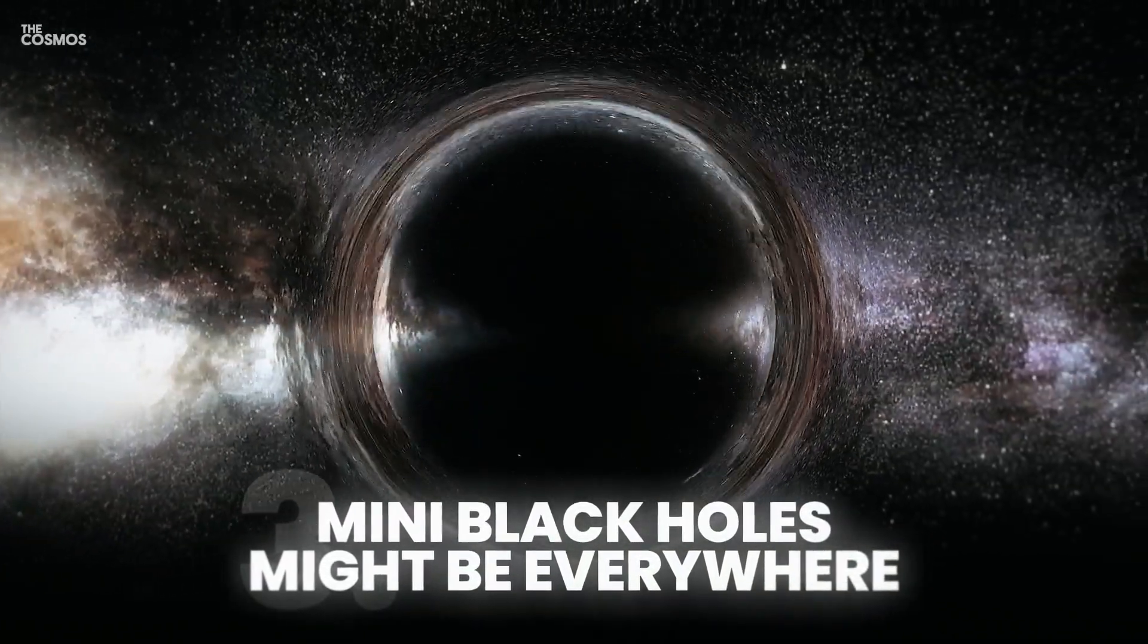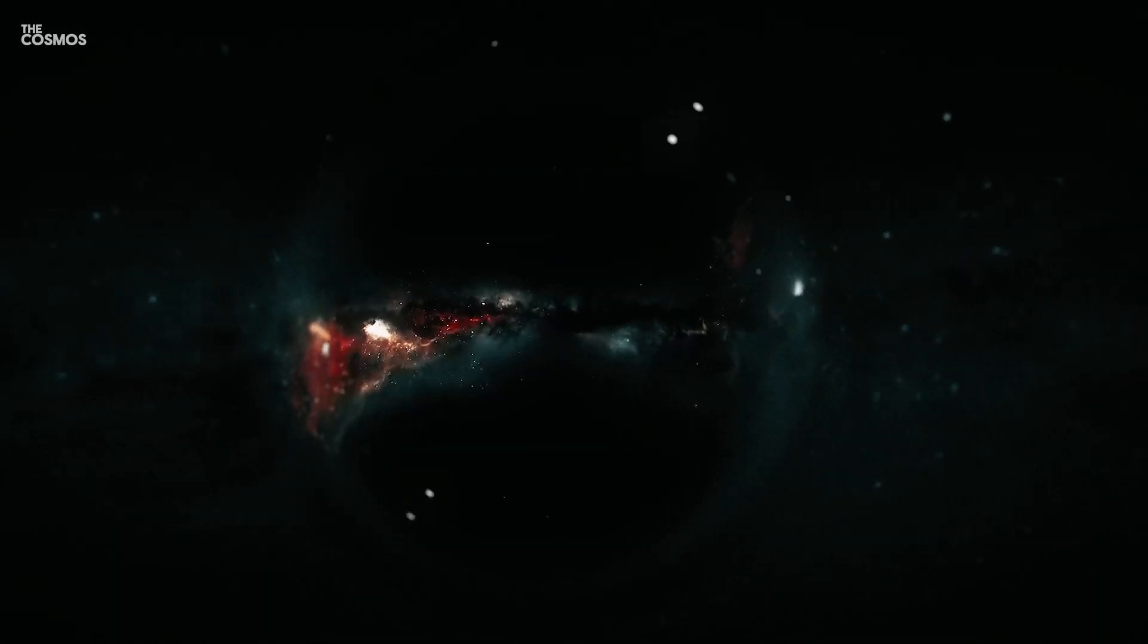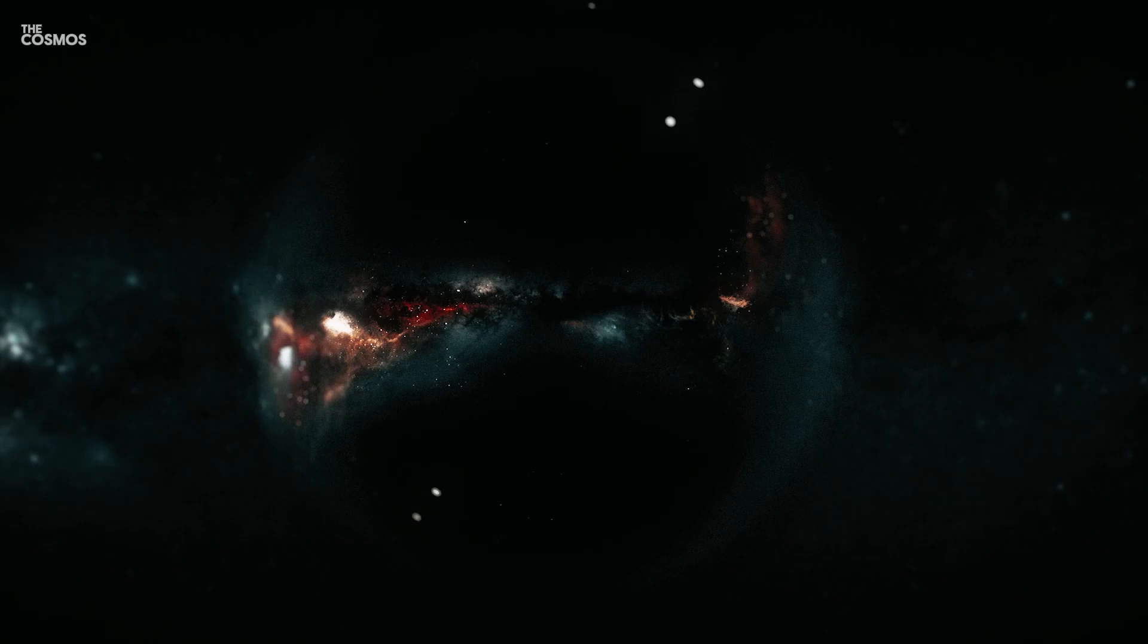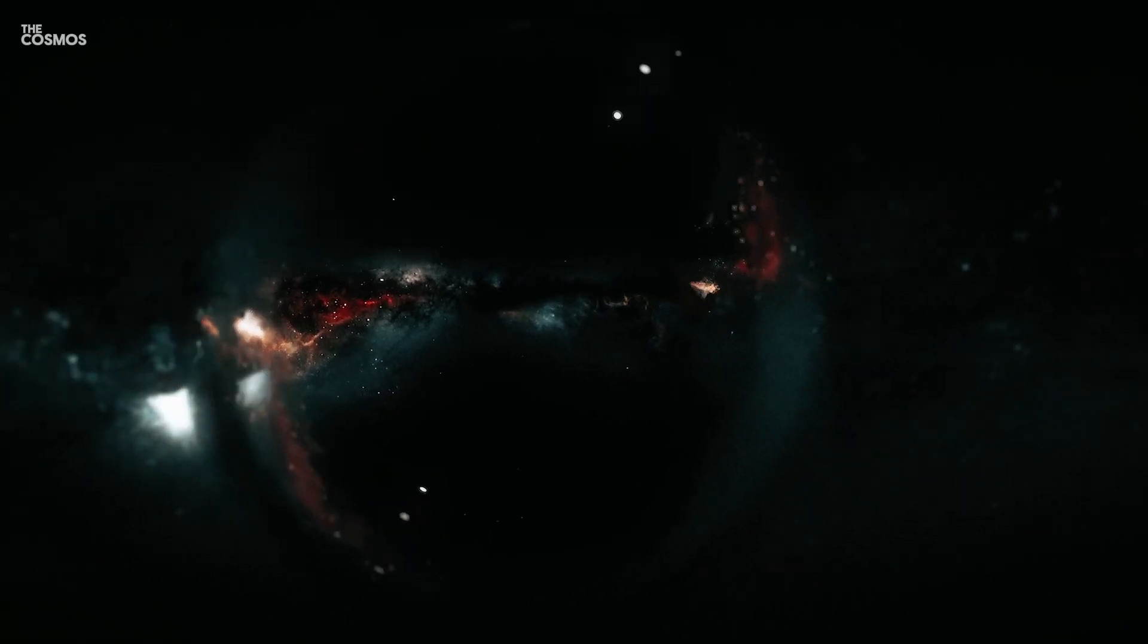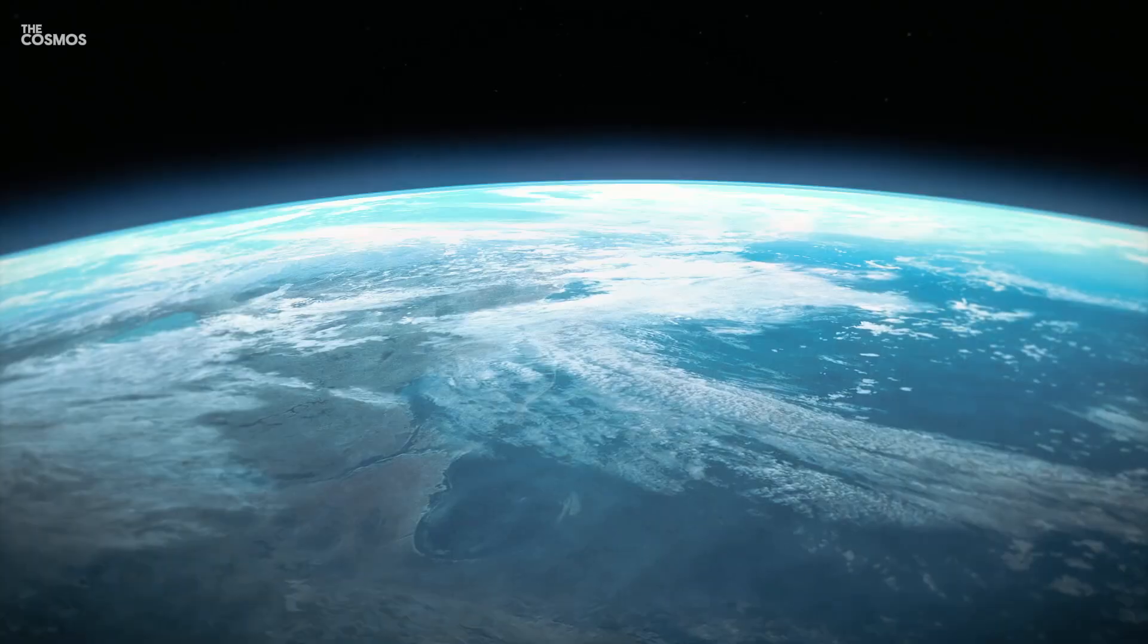Mini black holes might be everywhere. While we commonly think of black holes as massive stellar objects, there could be countless tiny black holes scattered throughout the universe. These primordial black holes are thought to have formed shortly after the Big Bang and could be as small as an atom but with the mass of a mountain.